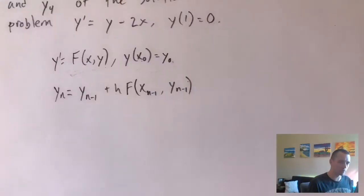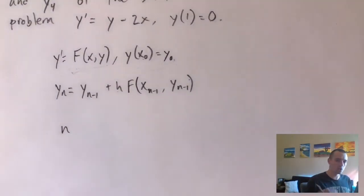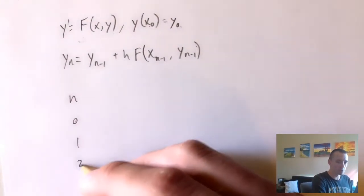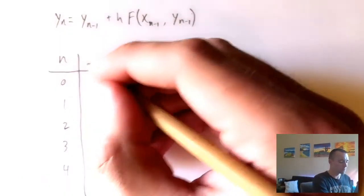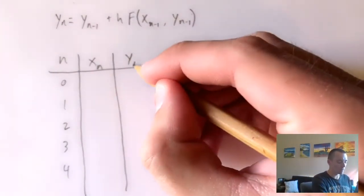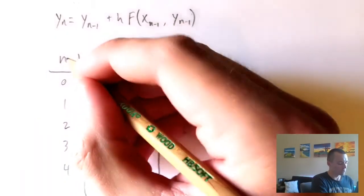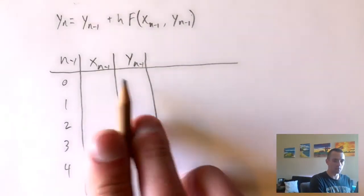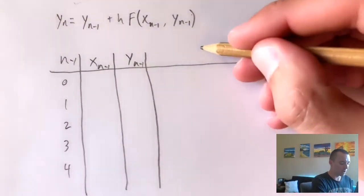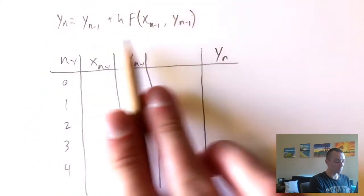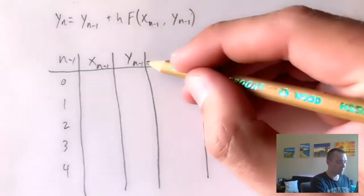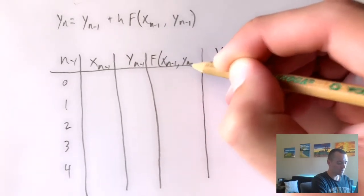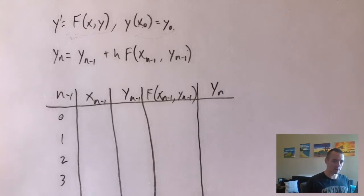We set up a table with a few columns. The first column is n — as we iterate, n increases by one each time: 0, 1, 2, 3, 4. Then we track the current x value as x_(n−1) and the current y value as y_(n−1), since these are the previous values used to find y_n. We also include a column for f(x_(n−1), y_(n−1)), which feeds directly into the Euler's method formula.